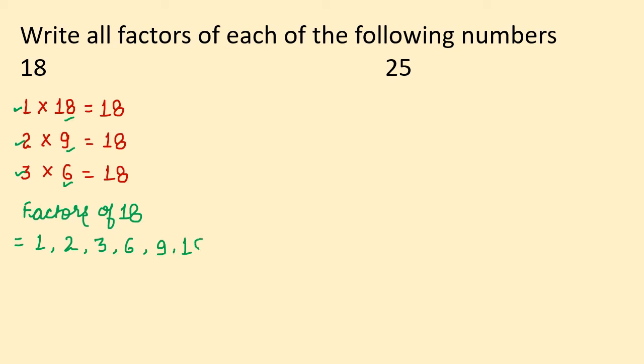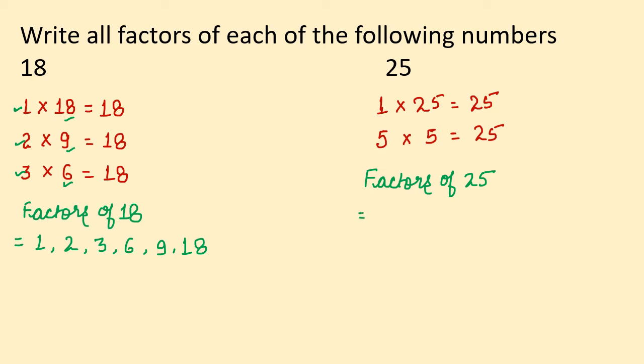The next number is 25. Again we start with 1: 1 multiplied by 25 equals 25. Now 25 does not come in the table of 2, 3, or 4. Then 25 comes in the table of 5: 5 multiplied by 5 equals 25. Here you can see that 5 has already repeated itself — we got 5 multiplied by 5. So we write 5 only one time. Therefore, the factors of 25 are 1, 5, and 25.